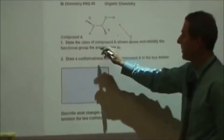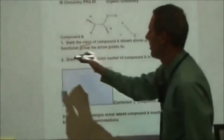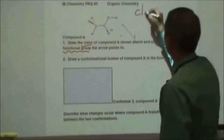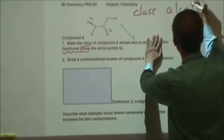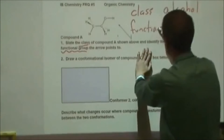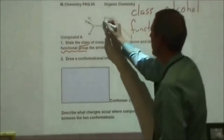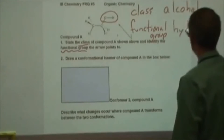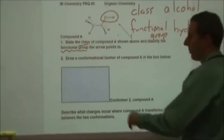It starts off by asking what's the class of compound A, and also what is the functional group that the arrow points to. The class is going to be the type of molecule — in this case it's an alcohol. Whereas the functional group is the specific part of the molecule that shows this particular reactivity. This is actually called a hydroxyl group, even though people will commonly refer to it as an alcohol group.